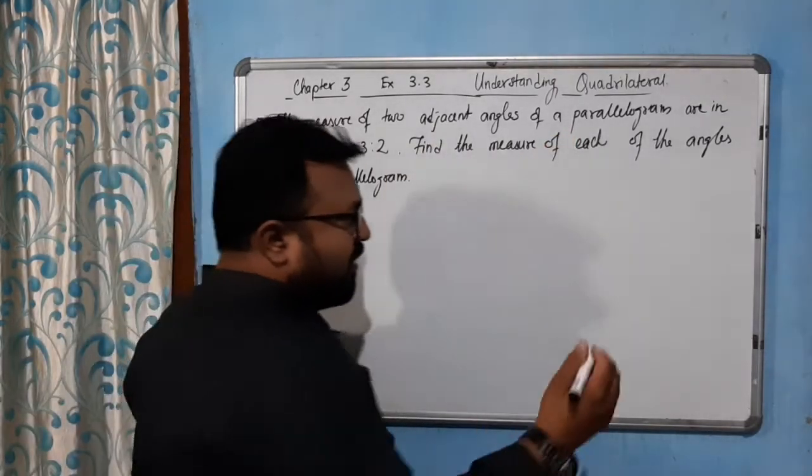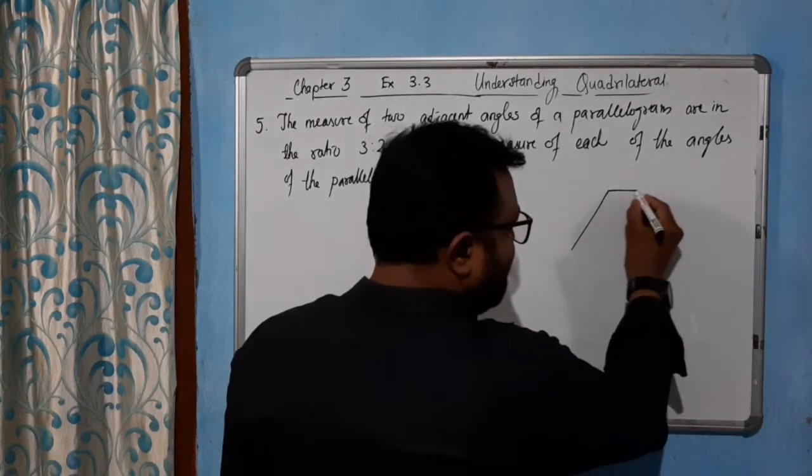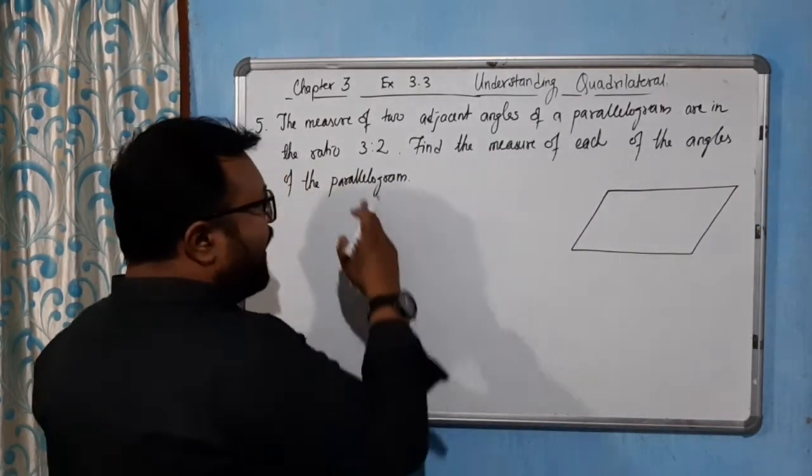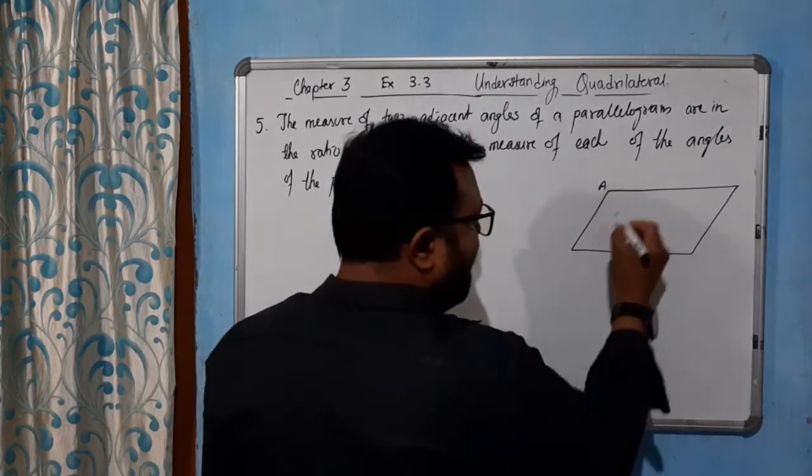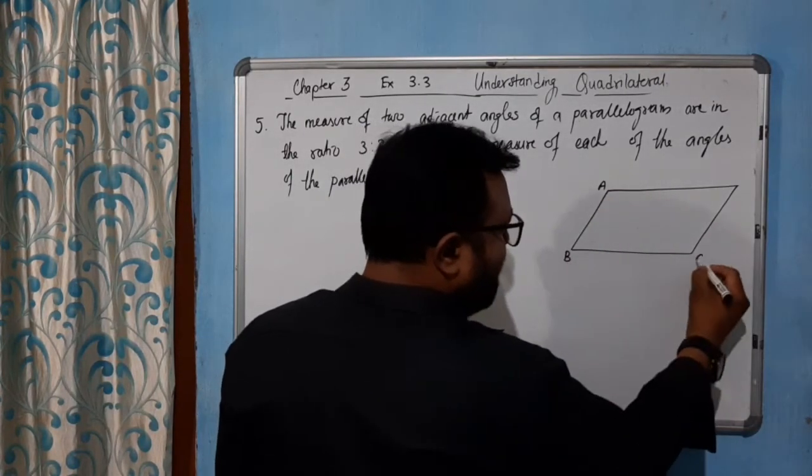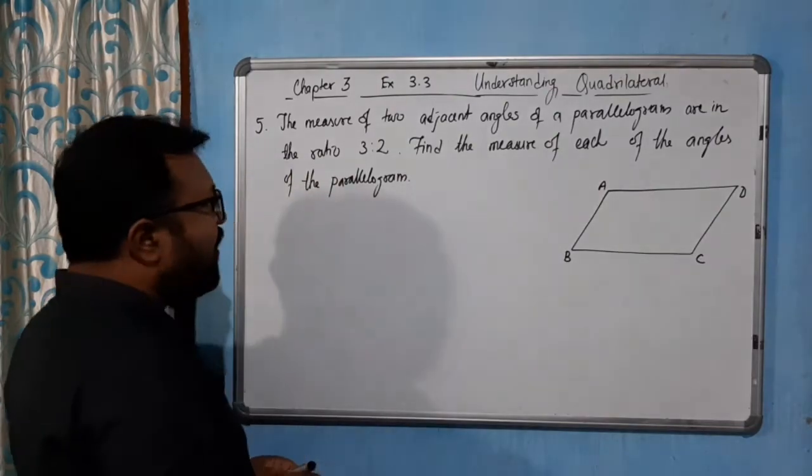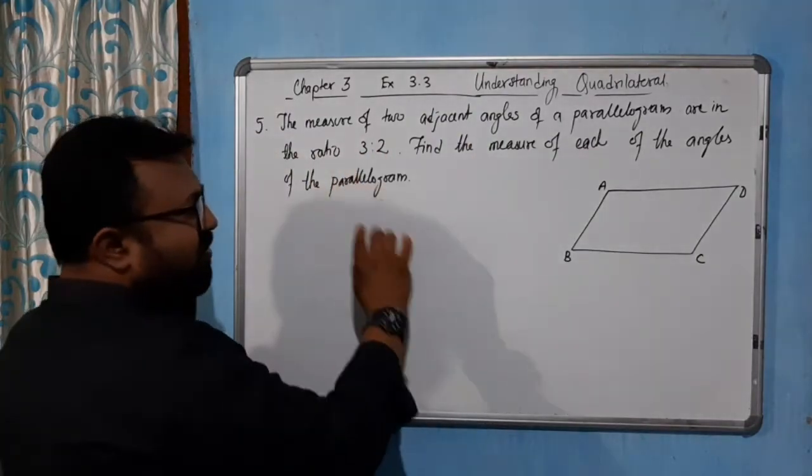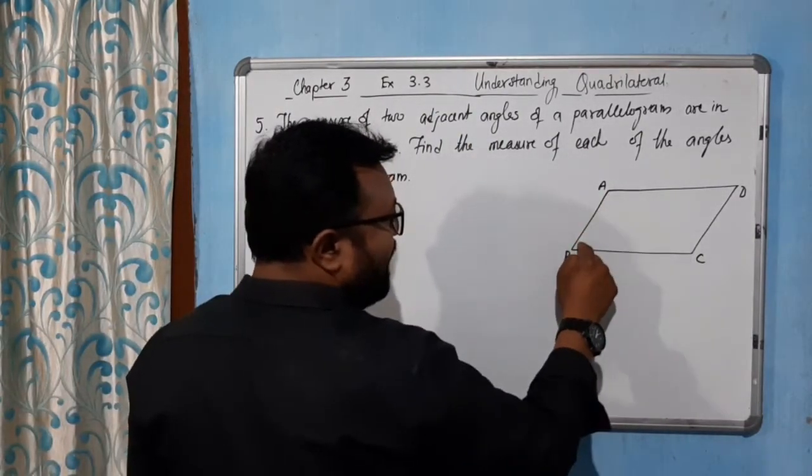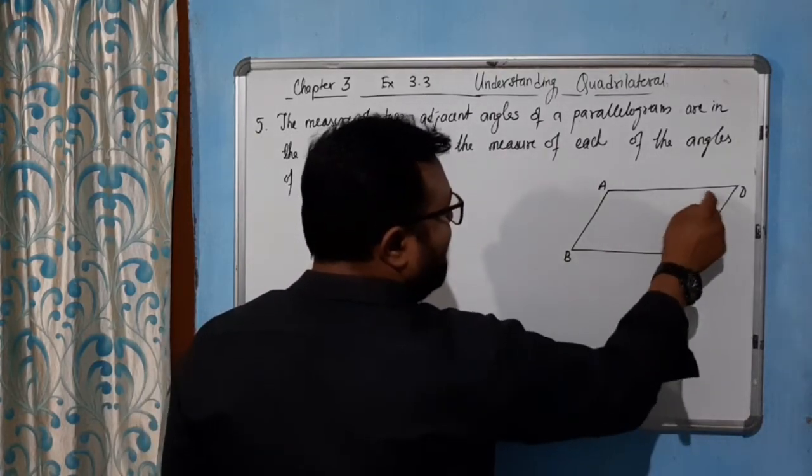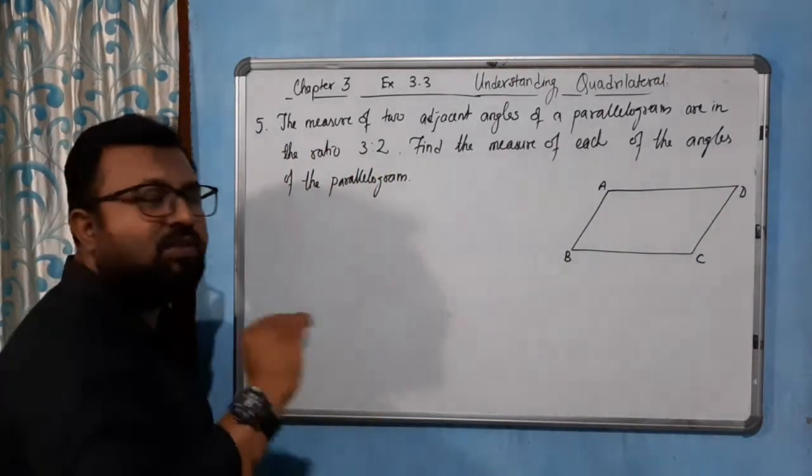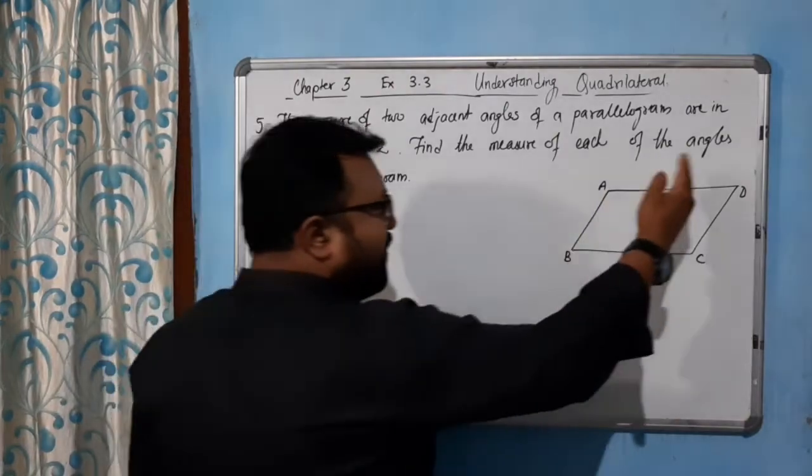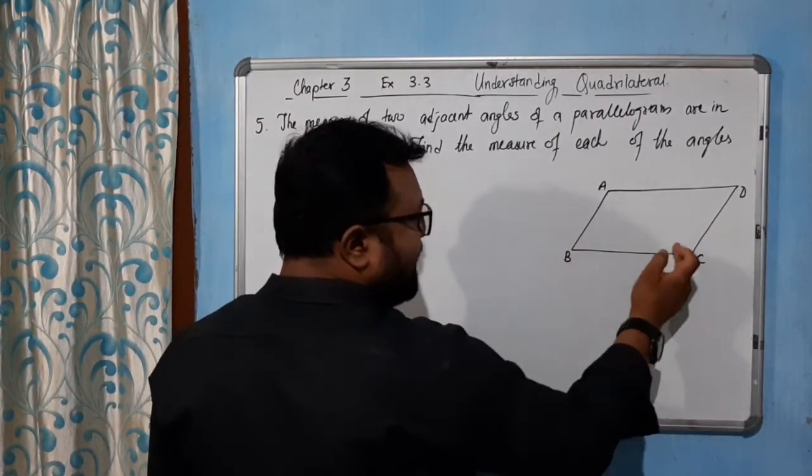So let me draw the parallelogram here. Suppose the parallelogram looks like this, okay. So the angles, suppose A, B, C, D. The question says that the measure of two adjacent angles of a parallelogram are in the ratio 3 is to 2. Two adjacent angles, either A and B, or B and C, or C and D, or D and A are in the ratio of 3 is to 2. Now we need to find the measure of these angles, or you can say the measure of the entire angle A, angle B, angle C, angle D.